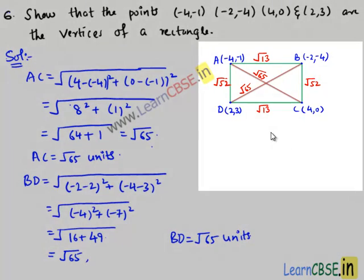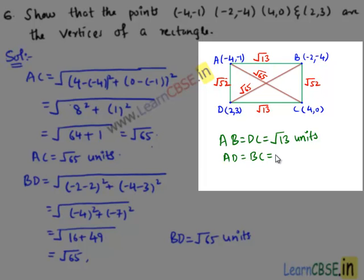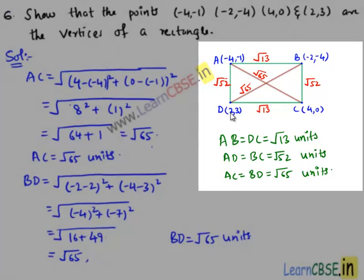Here we see that AB equals DC equals √13 units, AD equals BC equals √52 units — that is, the opposite sides are equal — and AC equals BD equals √65 units — that is, the lengths of the diagonals are equal. Therefore the four points A, B, C and D form a rectangle.